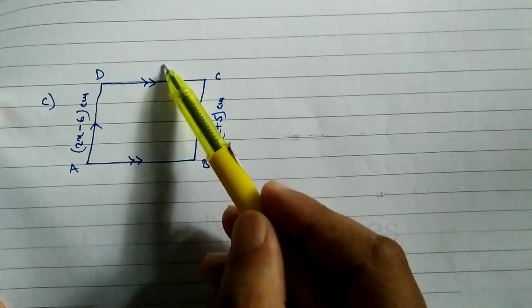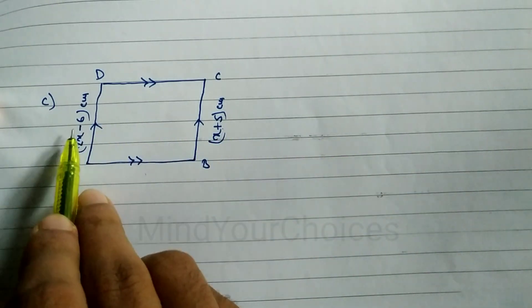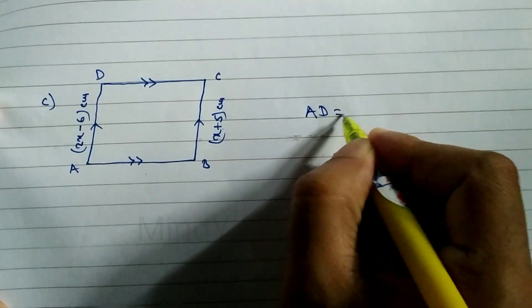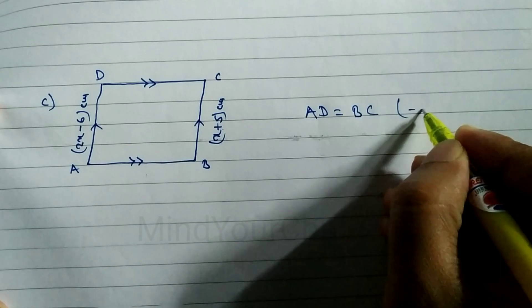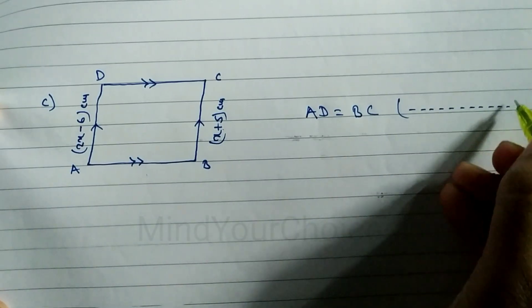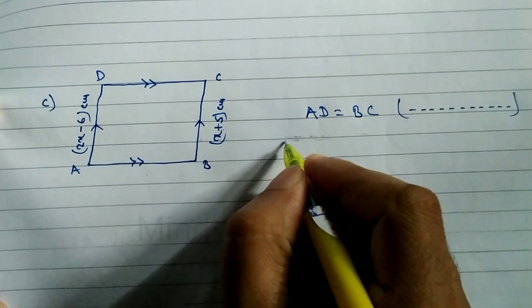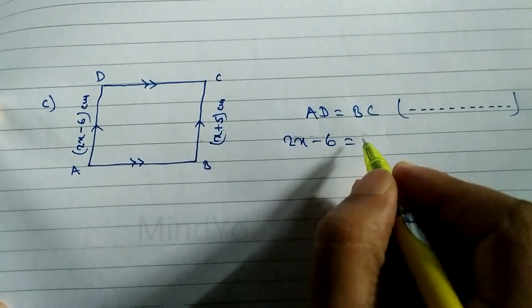Now look at question number c. Here ABCD is a parallelogram. Opposite sides are equal: AB equals CD, and AD equals BC. Here the sides AD and BC are given, so we write AD is equal to BC. Reason: opposite sides of a parallelogram are equal. The length of AD is 2x minus 6.